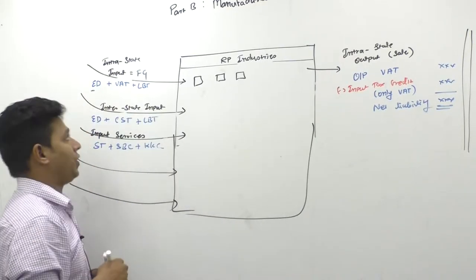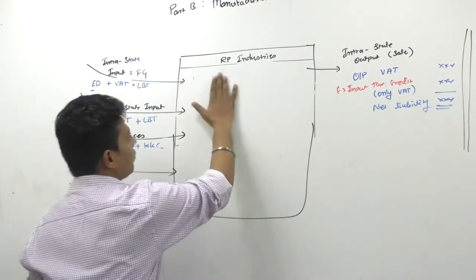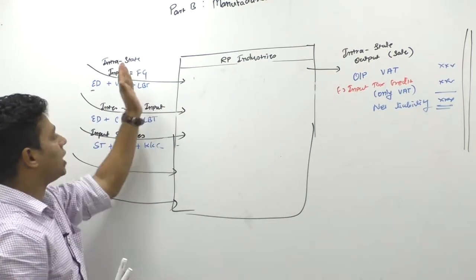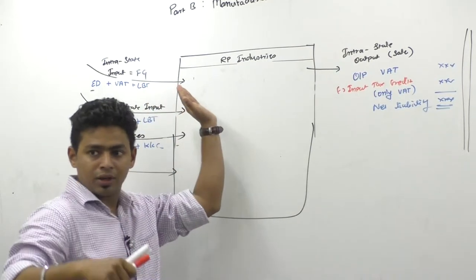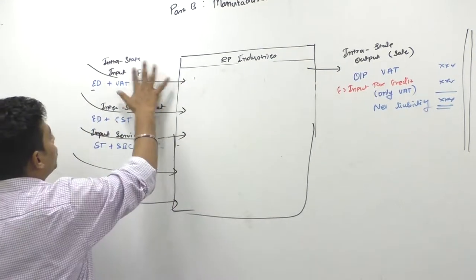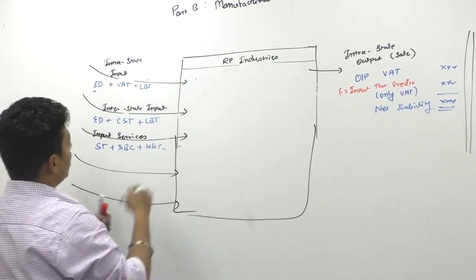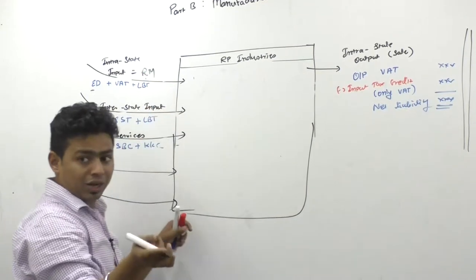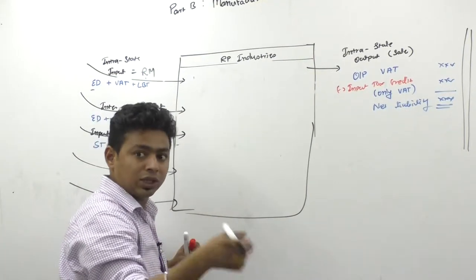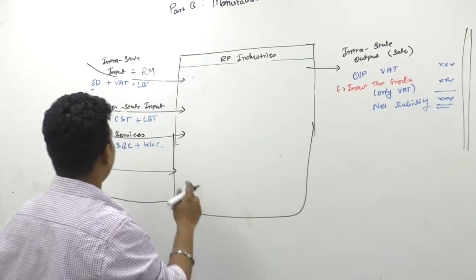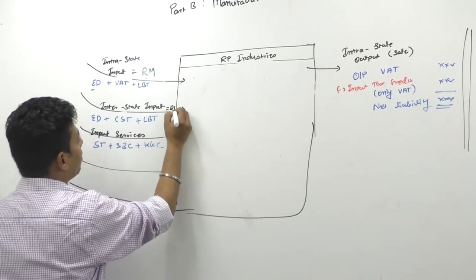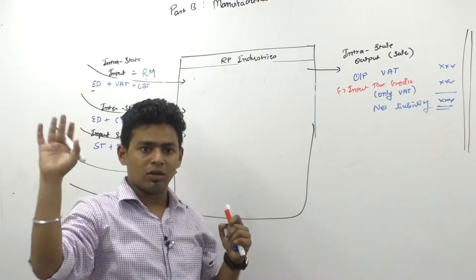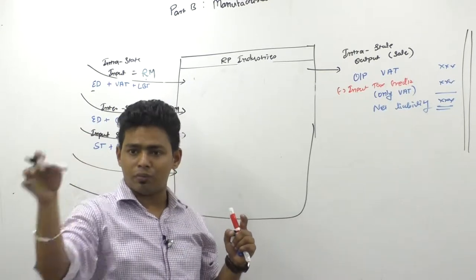As a manufacturer, what will you do? You will purchase some goods from Maharashtra, but that will not be finished goods — that will be your raw material, because the manufacturer doesn't purchase finished goods, he purchases raw material. He can also purchase some raw material from Gujarat, Kerala, Karnataka, and other states.